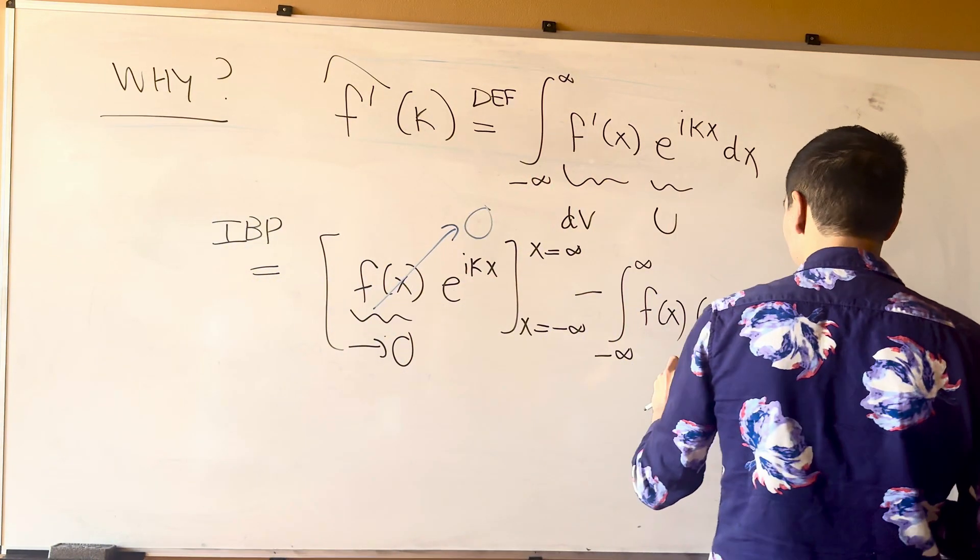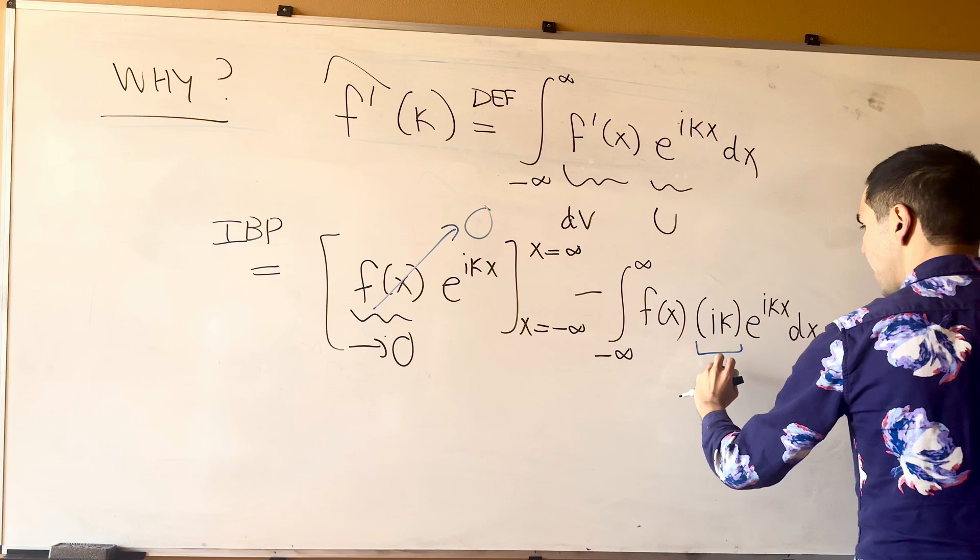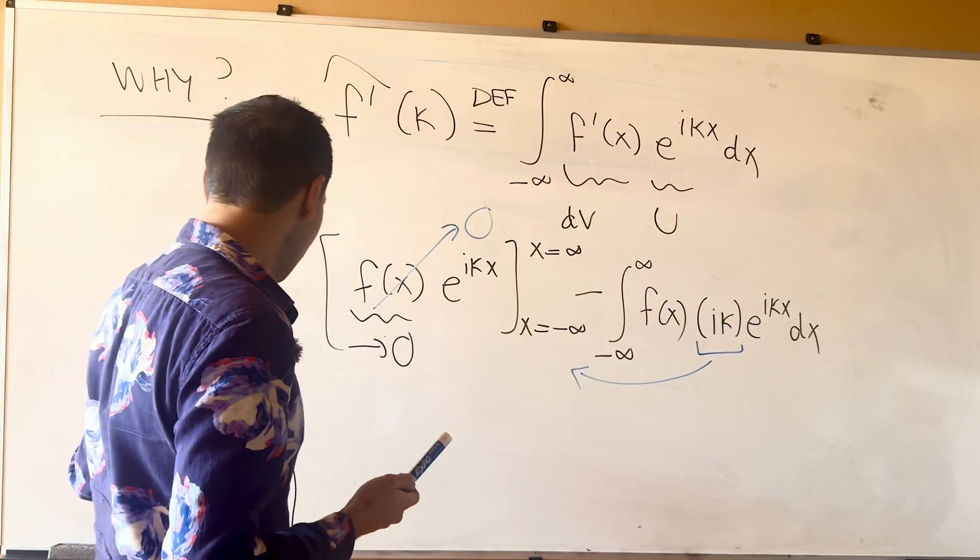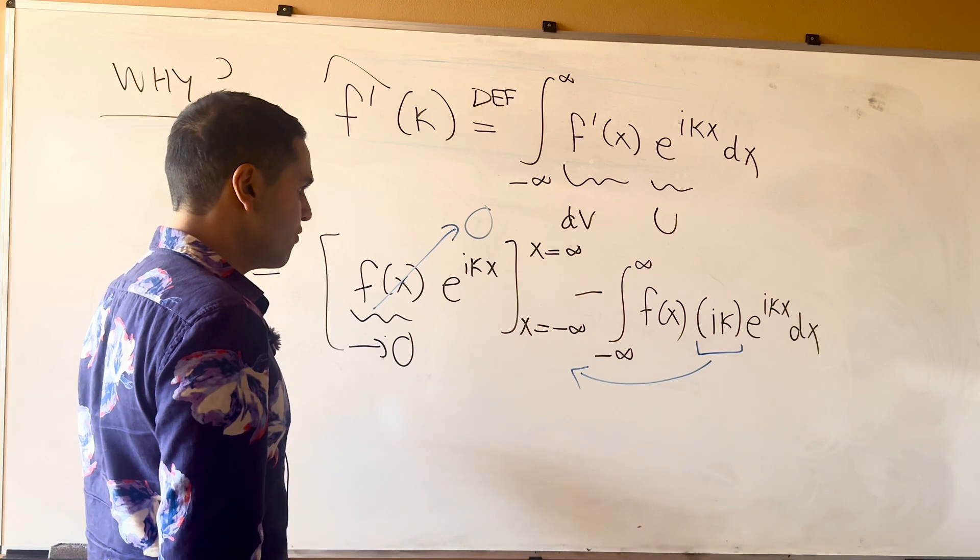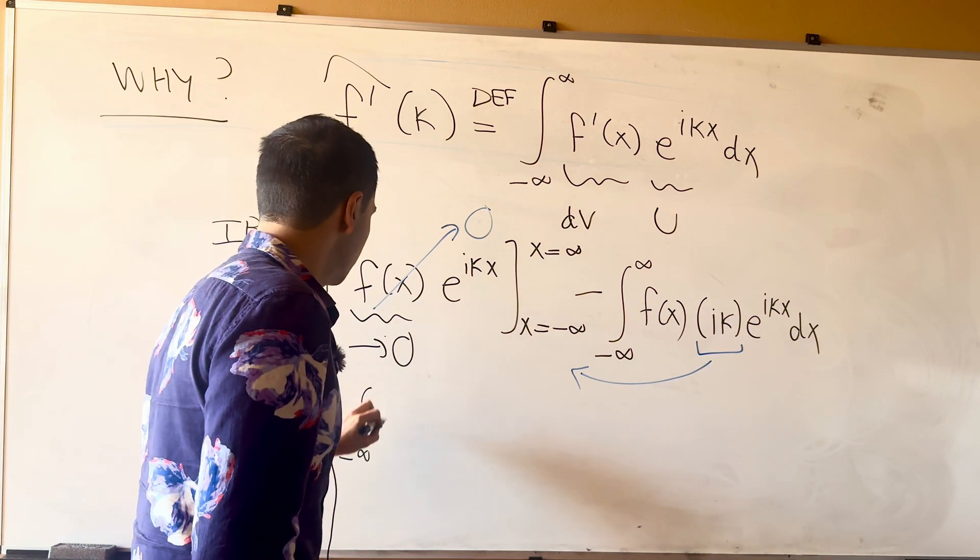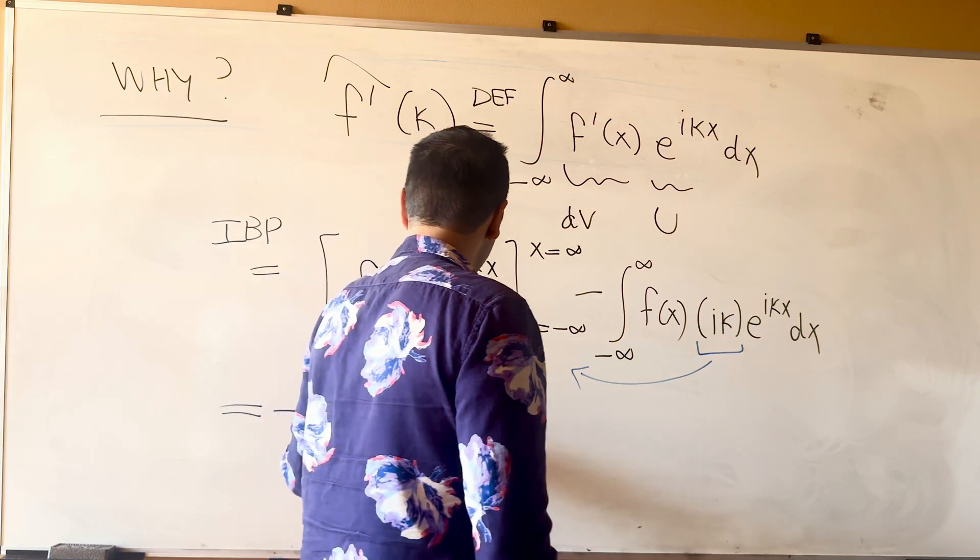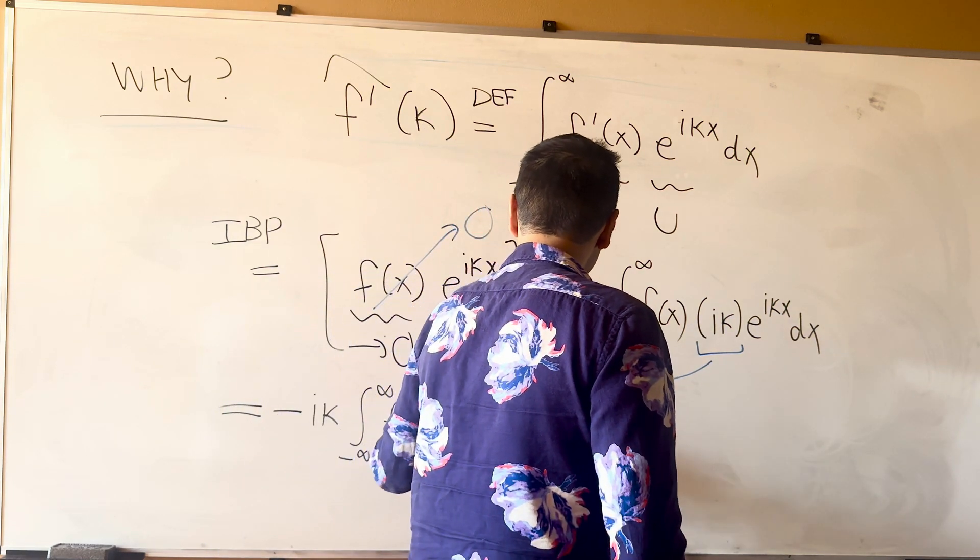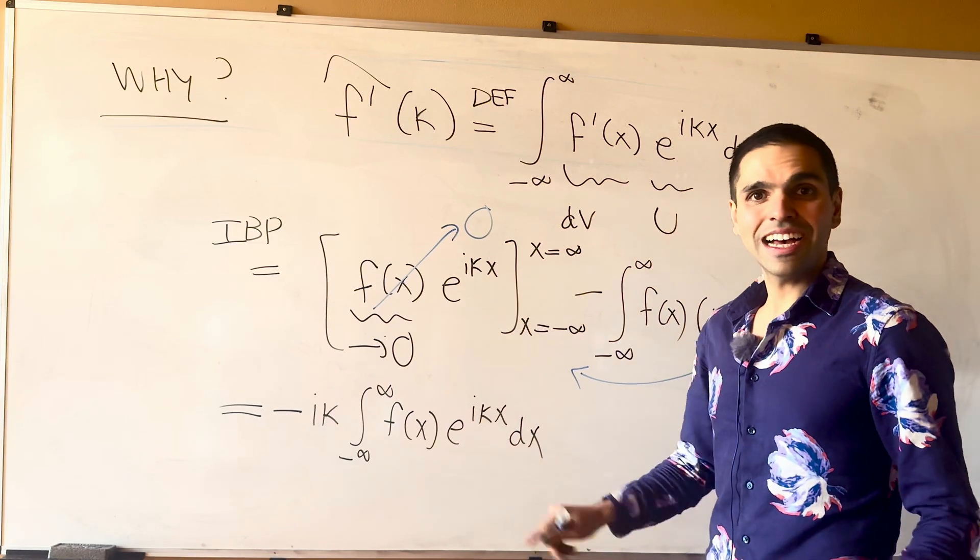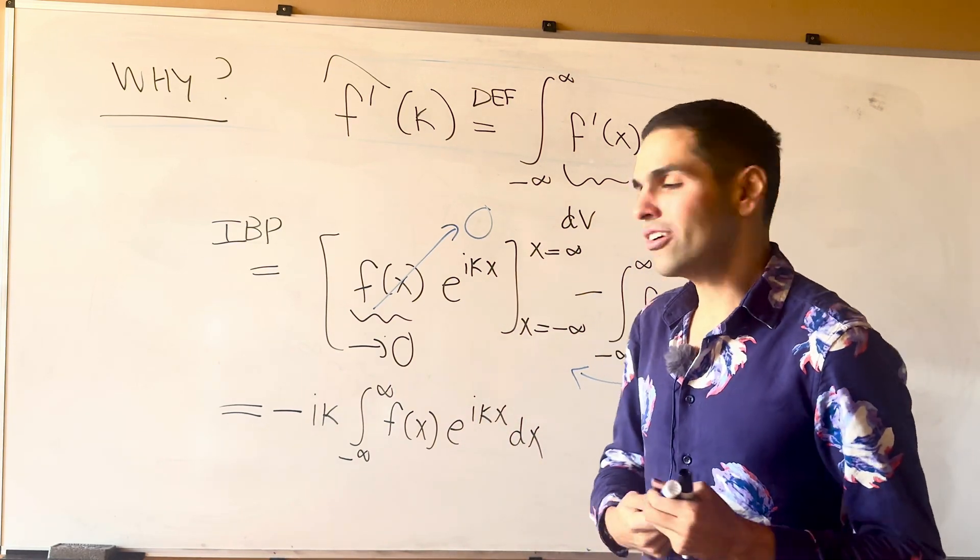That's first of all, and moreover, this i kappa just comes out, because it doesn't depend on x. And what you're left with is simply minus i kappa, and the integral here, f of x, e to the i kappa x dx. And the cool thing is, you kind of have a fractal phenomenon going on here,